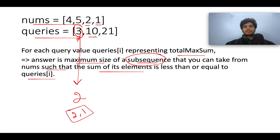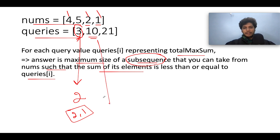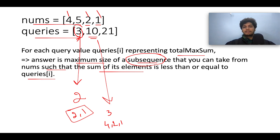The next query value is 10. How many elements can you pick from the nums array such that the total of those elements remains less than or equal to 10? There are three such elements: 4, 2, and 1. So the answer is 3, and those elements are 4, 2, and 1. Their total is 8, which is less than 10. As soon as we include 5, the sum goes beyond 10, so 5 can't be included.